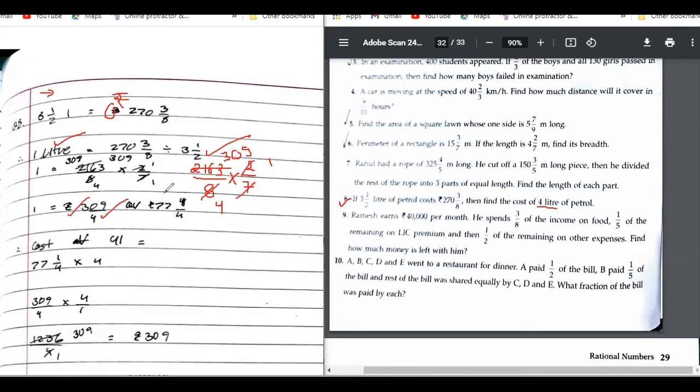And the final answer is 77 and what is this? 77 one upon four. One second, let me check. 7 times 4, okay perfect. The answer 77 one upon four is the cost.